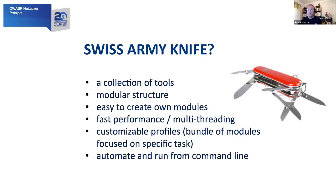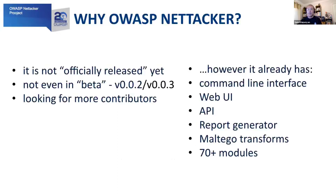And of course the most important thing is automation, because you can automate and run this tool from the command line. A few other bits about OWASP NetHacker: it is not an officially released tool yet — it's not even in beta; it's still in research and development phase. The current versions are 002 and 003, and we're always looking for more contributors. However, what is great is that it is usable right now. It already has a command line interface, web user interface, an API, a report generator, and Maltego transforms for people who use Maltego — which is a great investigation tool available in Kali Linux. NetHacker currently has over 70 modules.